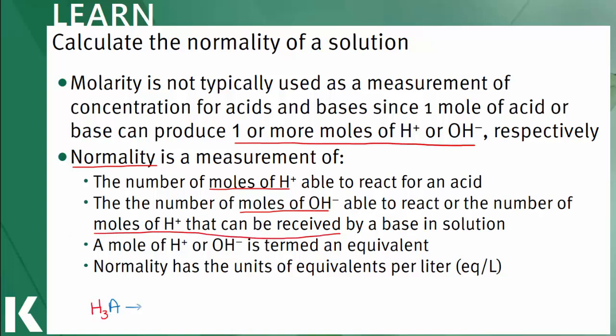For instance, for an acid with a formula H3A, it can donate three molecules of hydrogen ions, so H3A has three equivalents. Or for the weak base B that can accept two molecules of hydrogen ions to form BH2 2+, there are two equivalents of hydrogen ions. Normality will be expressed as units of equivalents per liter.